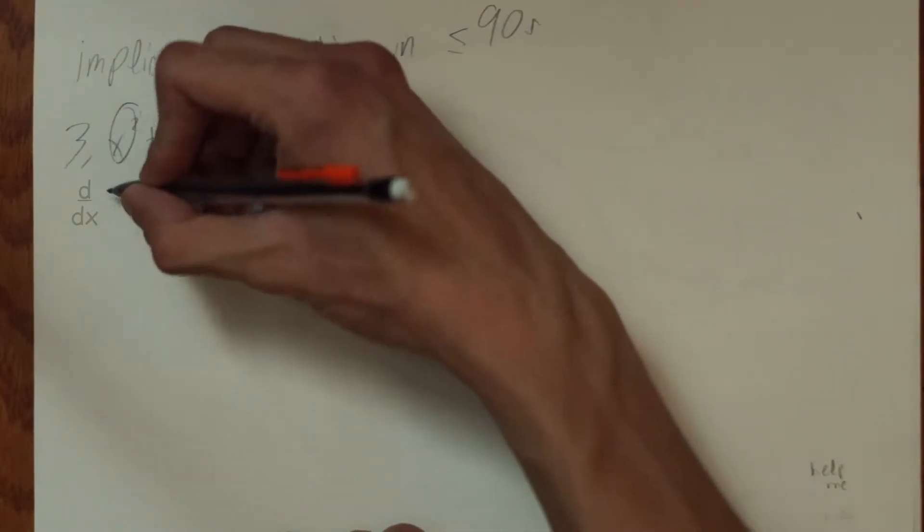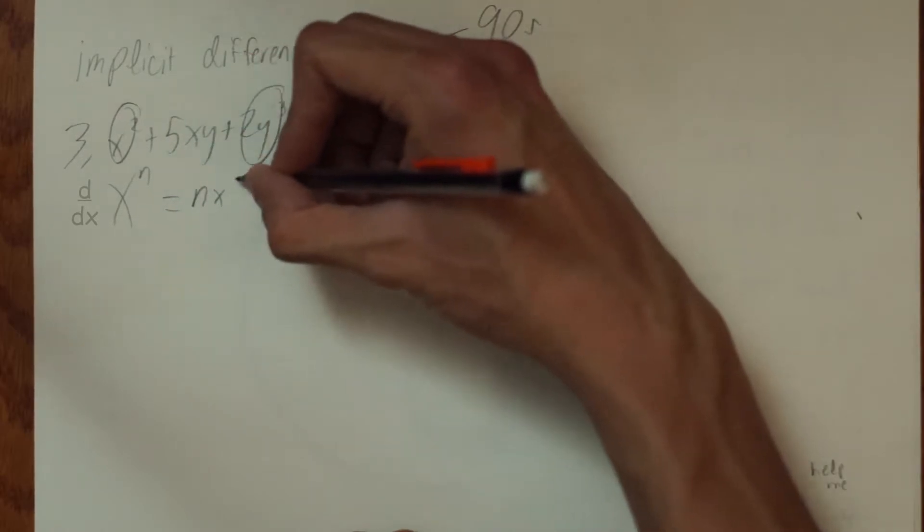The power rule for derivative states that d over dx equals nx to the n minus 1 power.